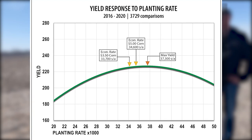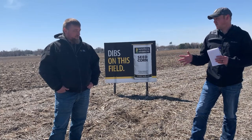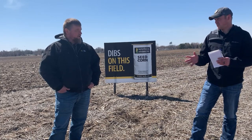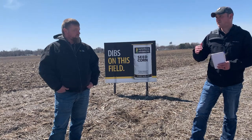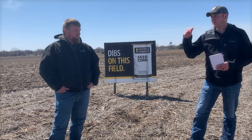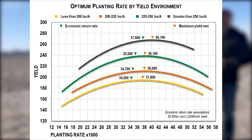So the economic rate — as the price of corn goes up, we can increase our planting rates across all productivity levels. Yeah, across all productivity levels. So we're talking maybe even a tick higher than that, right, we're looking at five dollars.